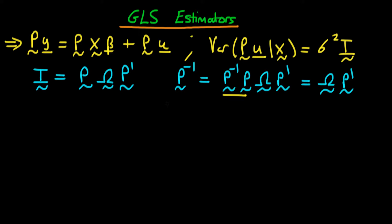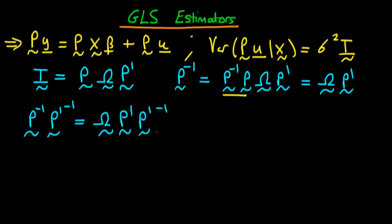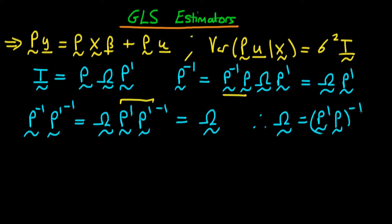We've eliminated the first P from our expression. Now we want to get rid of P transposed on the right-hand side. We multiply both sides by the inverse of P transposed, giving us P transposed inverted equals omega times P transposed times P transposed inverted. A matrix times its inverse is the identity matrix, so this simplifies to omega. We can represent this more simply: omega equals P transposed times P, all to the power minus one, because taking the inverse of a product reverses the order of multiplication.